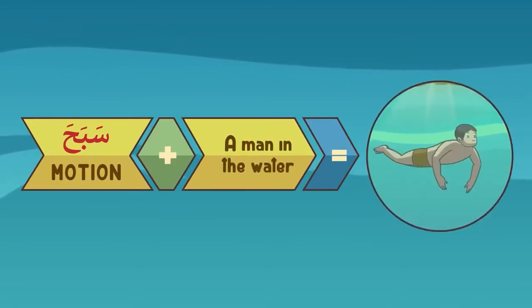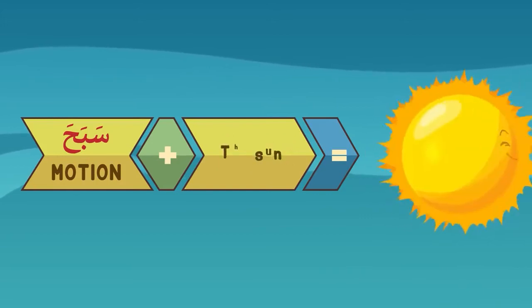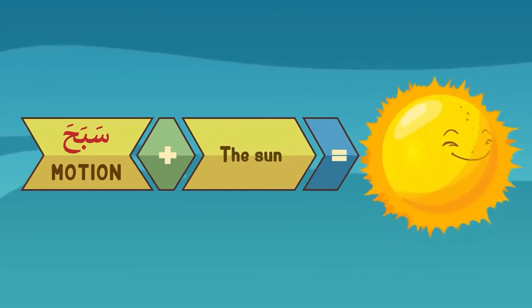If you use the word for a man in water, it would not mean that he is floating, but would mean that he is swimming. Similarly, if you use the word yasbah for a celestial body such as the sun, it would not mean that it is only flying through space, but would rather mean that it is also rotating as it goes through space.